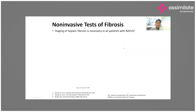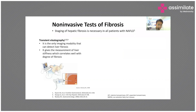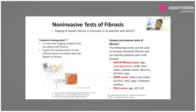Staging of hepatic fibrosis is necessary in all patients with fatty liver. Transient elastography — fibroscan — is the only non-invasive modality that can detect liver fibrosis, providing a measurement of liver stiffness that correlates well with the degree of fibrosis. However, this test is usually reserved for patients who do not have obesity, as obesity interferes with the assessment. Other non-invasive tests for fibrosis are also available.